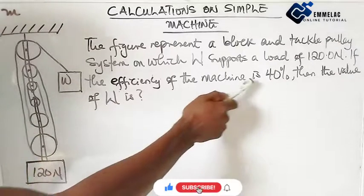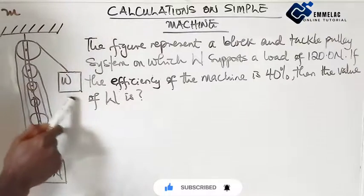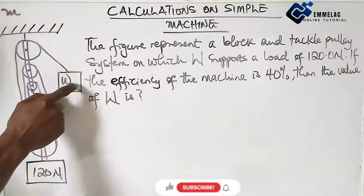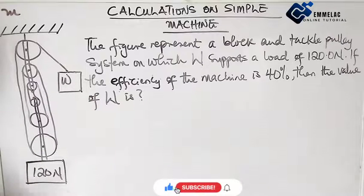If the efficiency of the machine is 40%, then the value of this is, this happens to be the effort that is pulling this load.